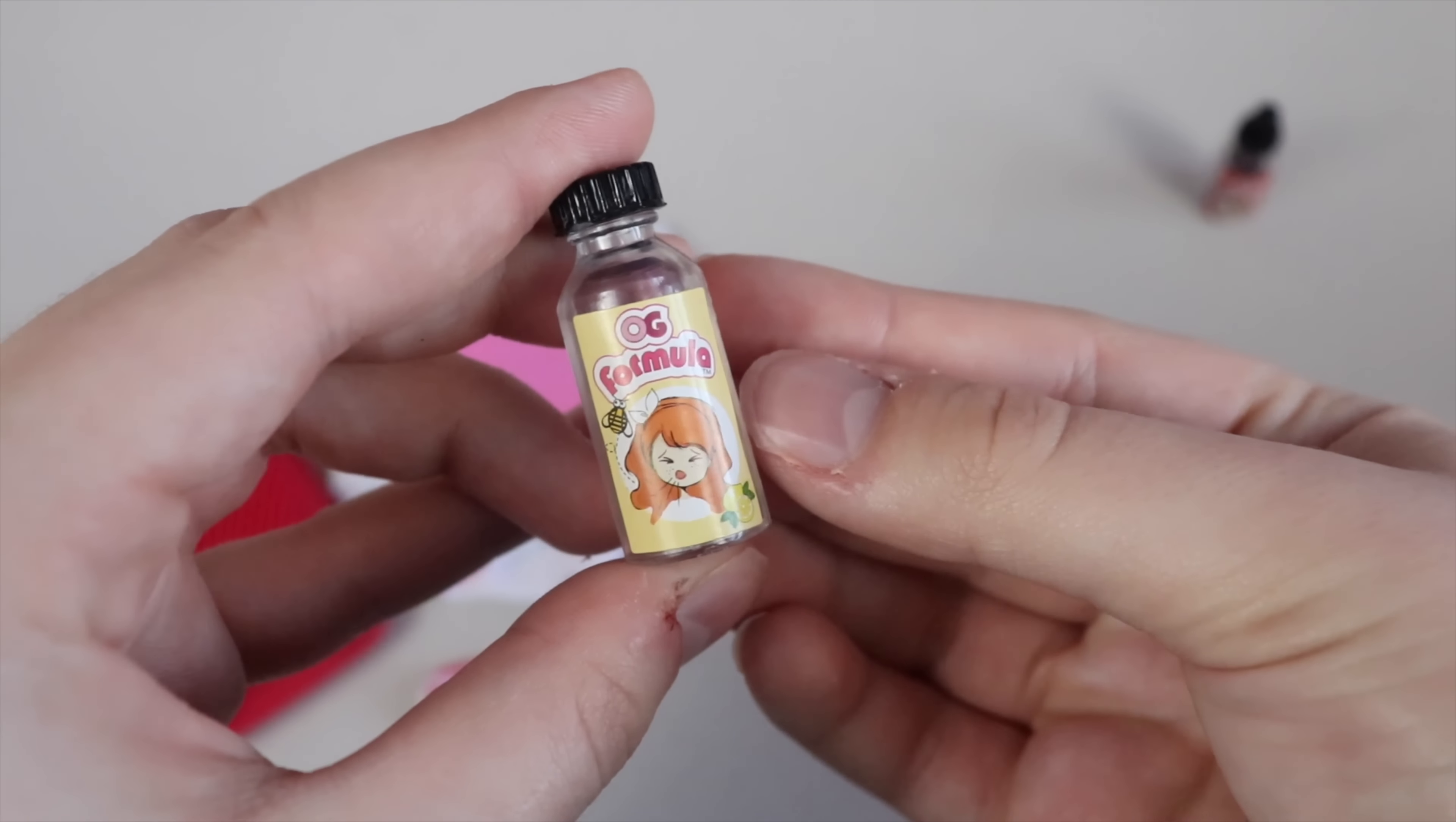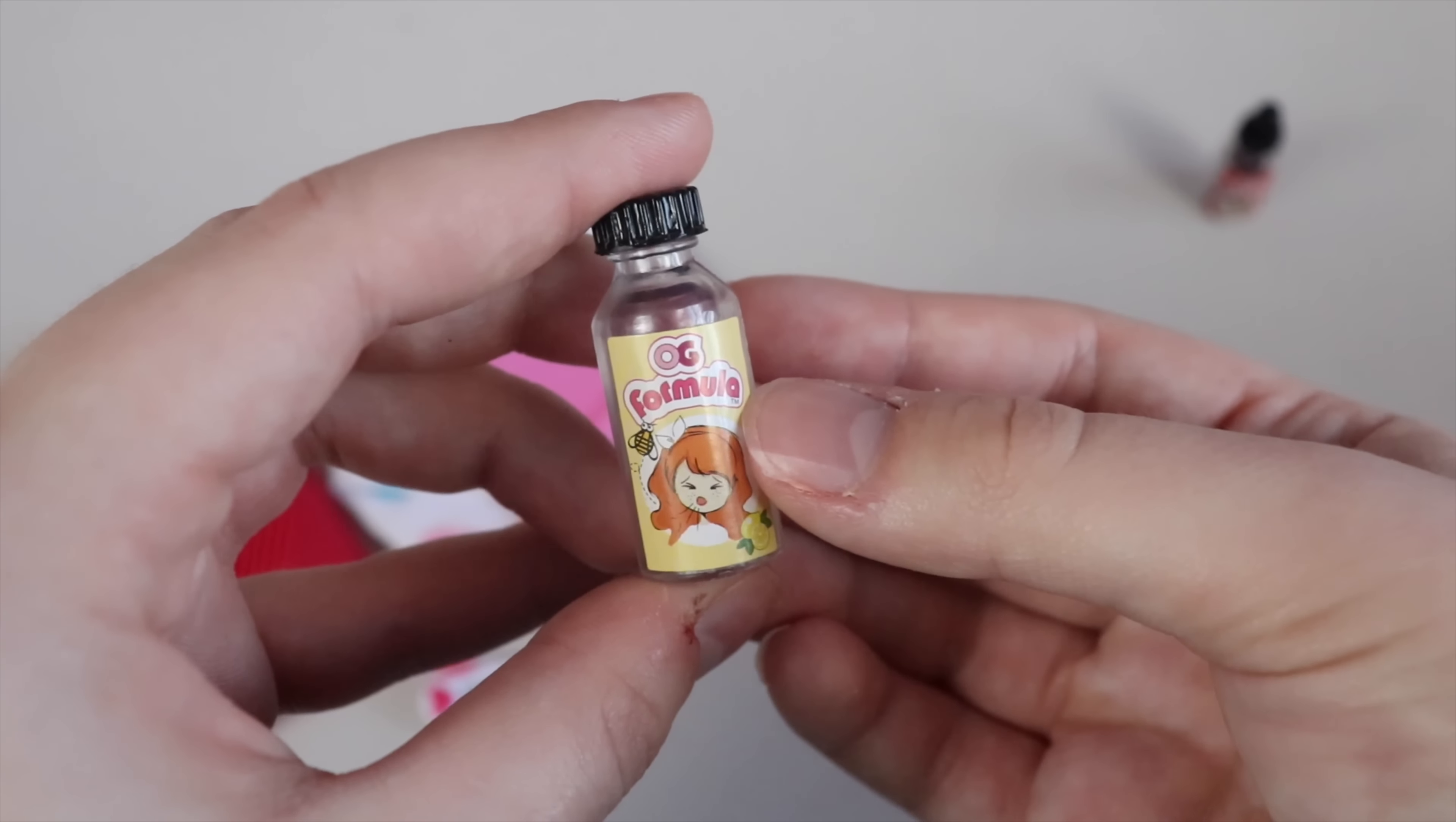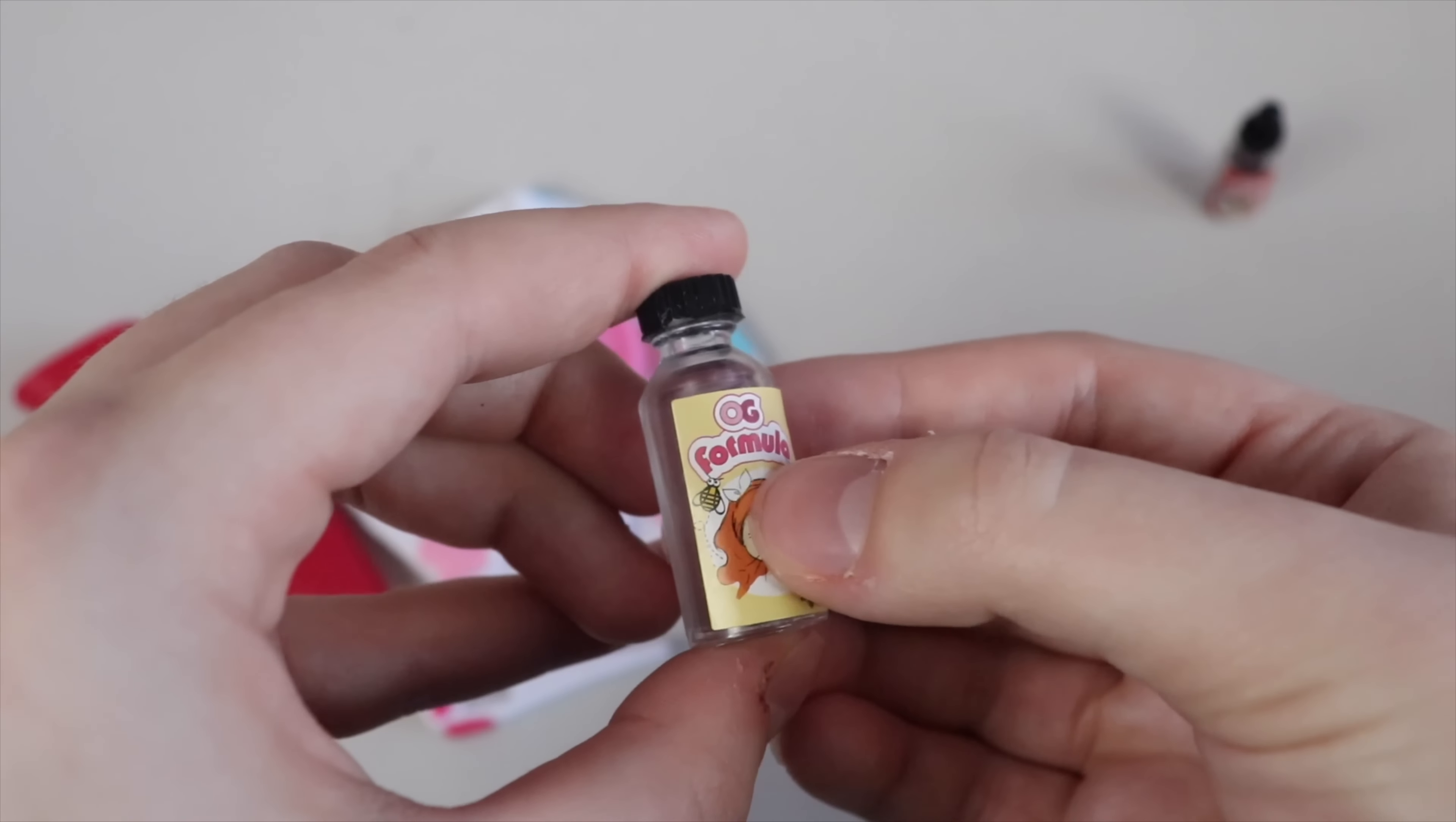Now, the medicine is definitely my favorite part of this set. This is the cough syrup. It has a label that says OG Formula with a drawing of a girl. It has lemons in the corner, and a bee over here.